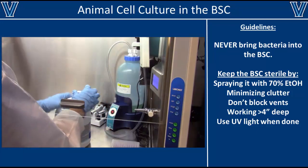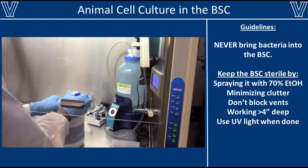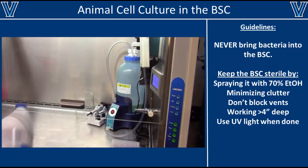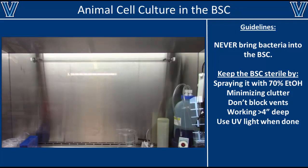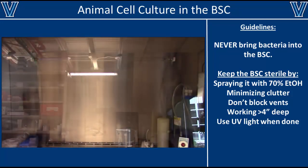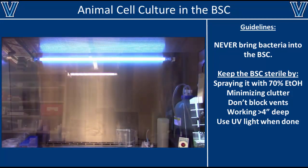Once you've added 100 ml of bleach to the tank, turn off the pump and tightly screw the lid back onto the bleach. When you're done working in the BSC, thoroughly spray down all surfaces with 75% ethanol. Next, close the sash and turn on the UV light for at least 30 minutes. This combination of ethanol and UV light should keep the BSC completely sterile, as long as it is also clutter free.